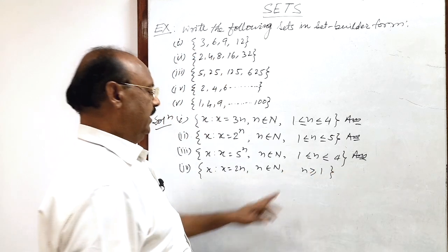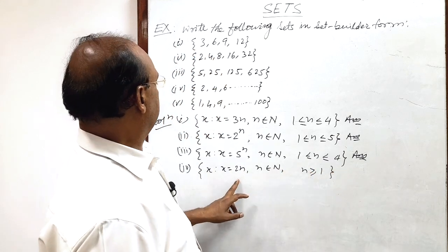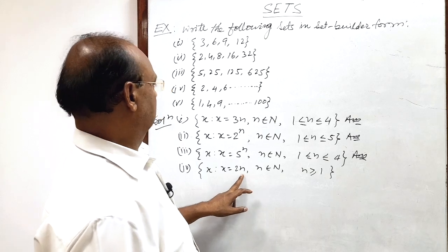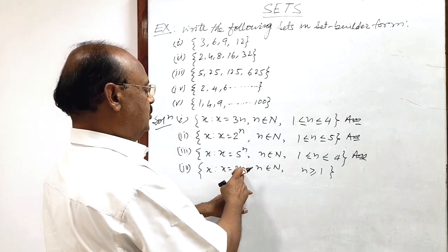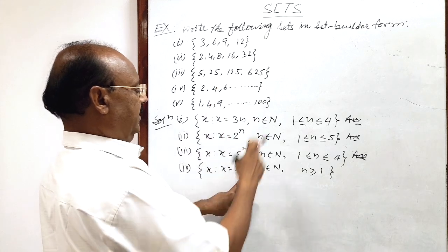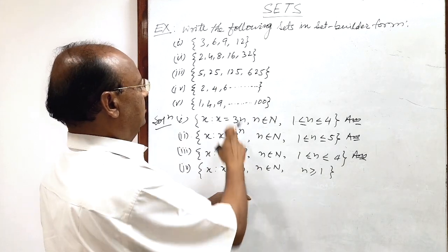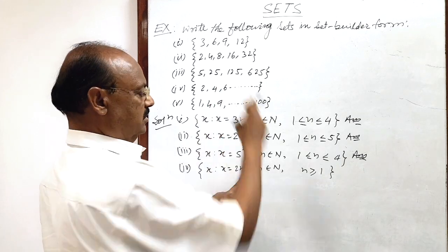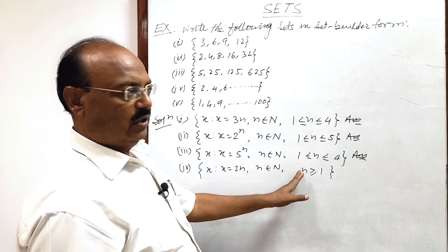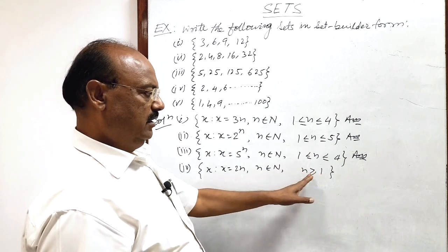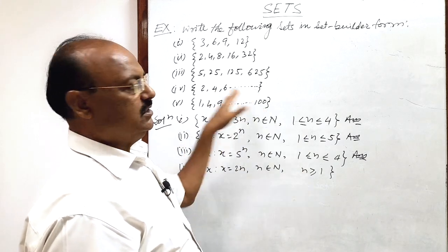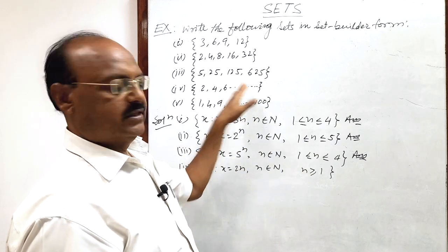So if n is 1, then 2 into 1 is 2. If n is 2, then 2 into 2 is 4. If n is 3, then 2 into 3 is 6, and there is no upper limit because this set is an infinite set.